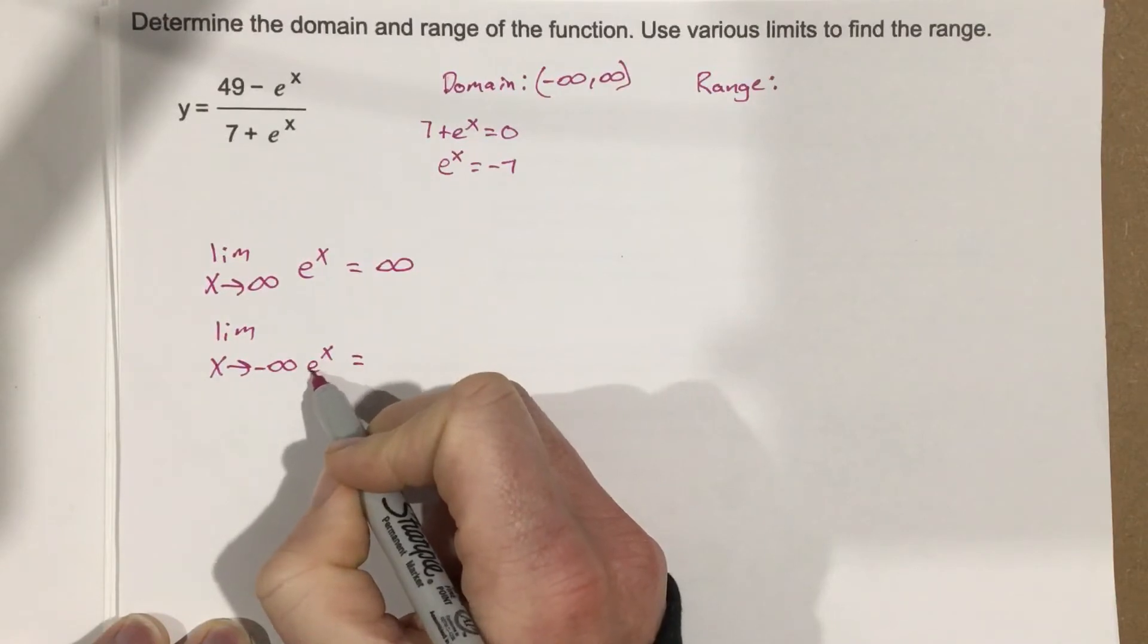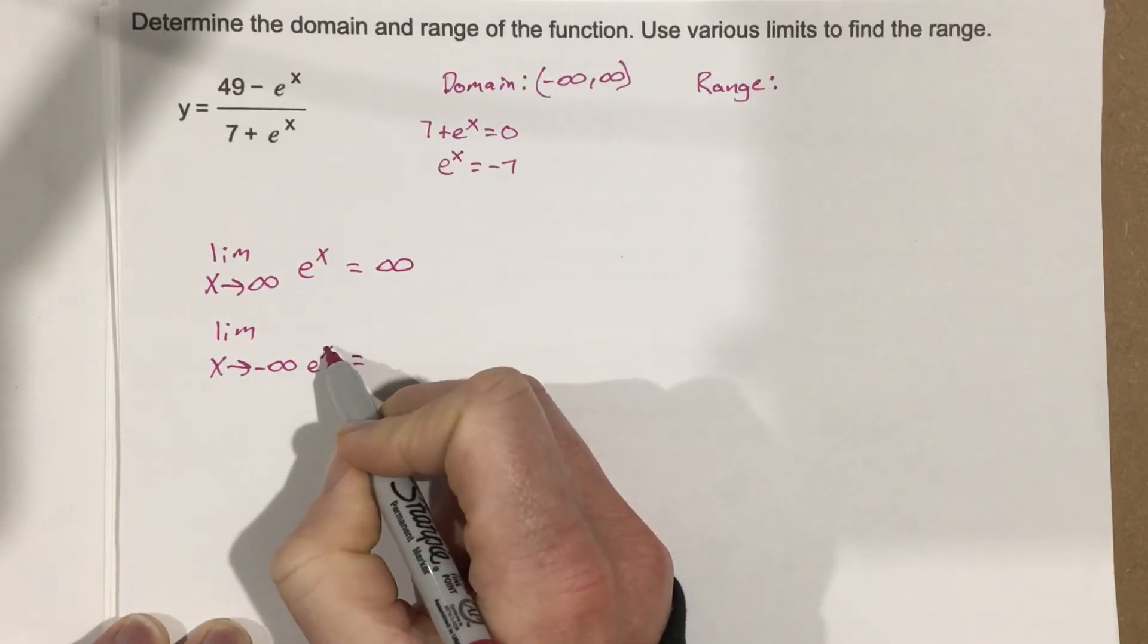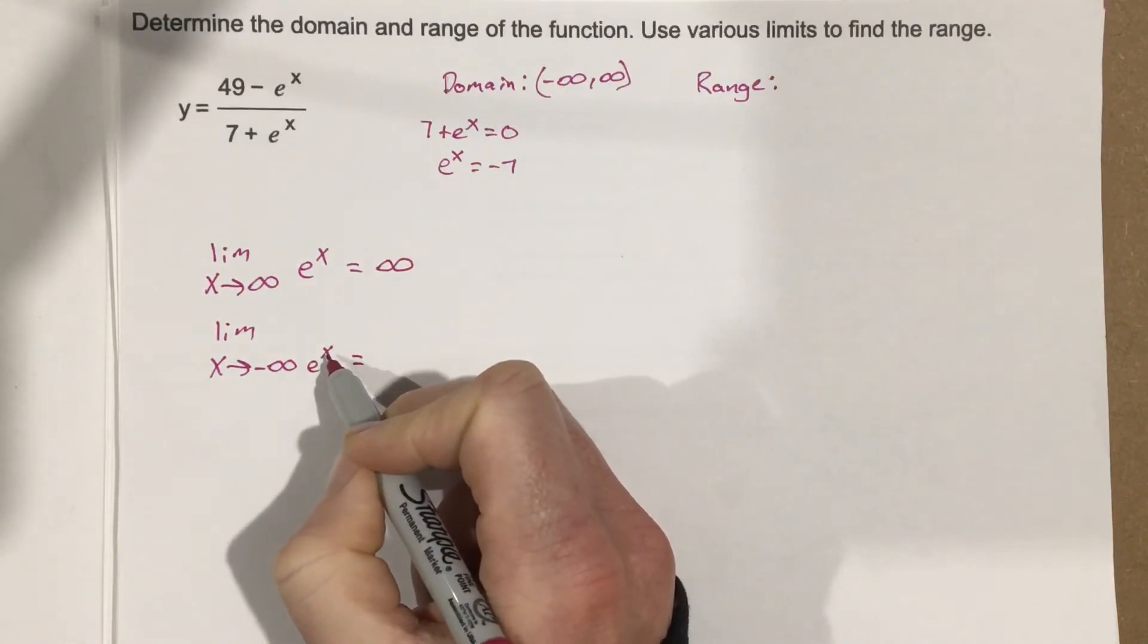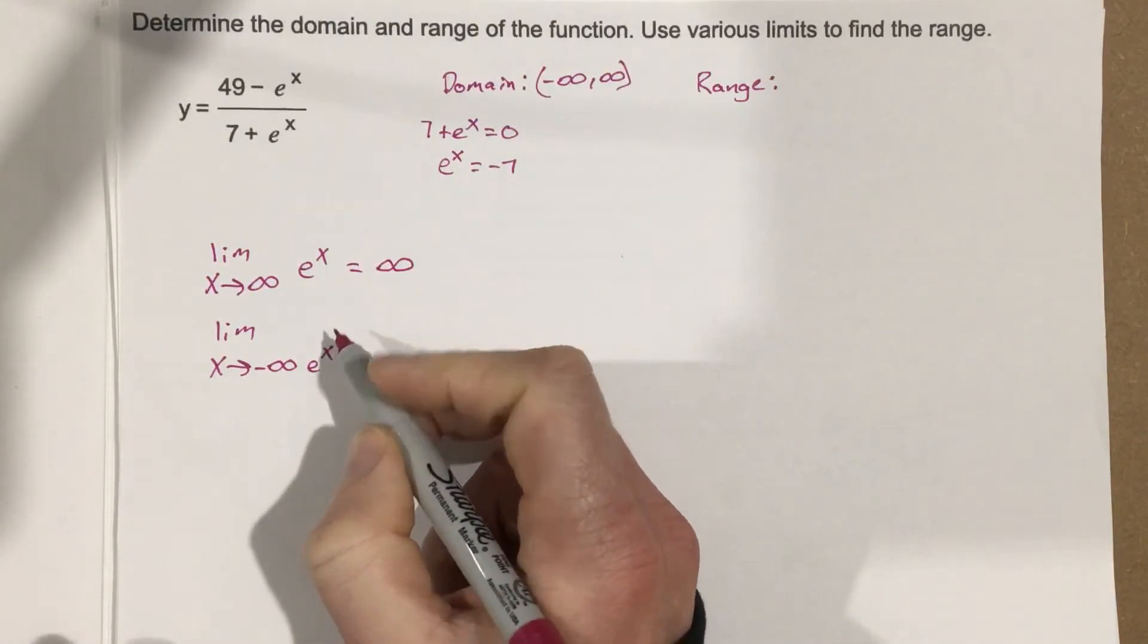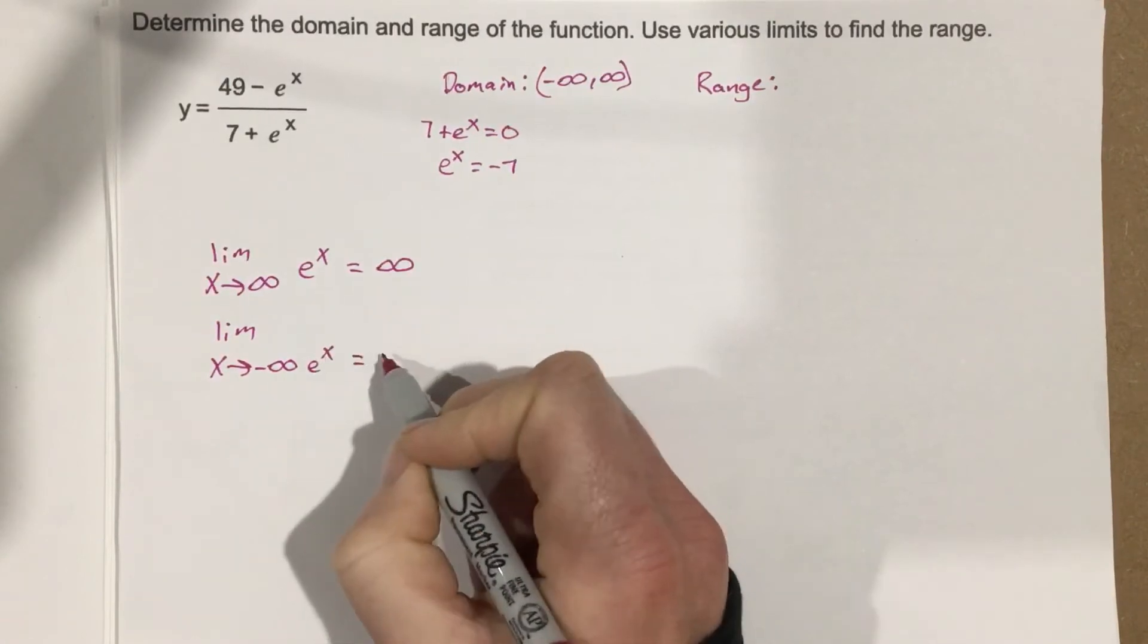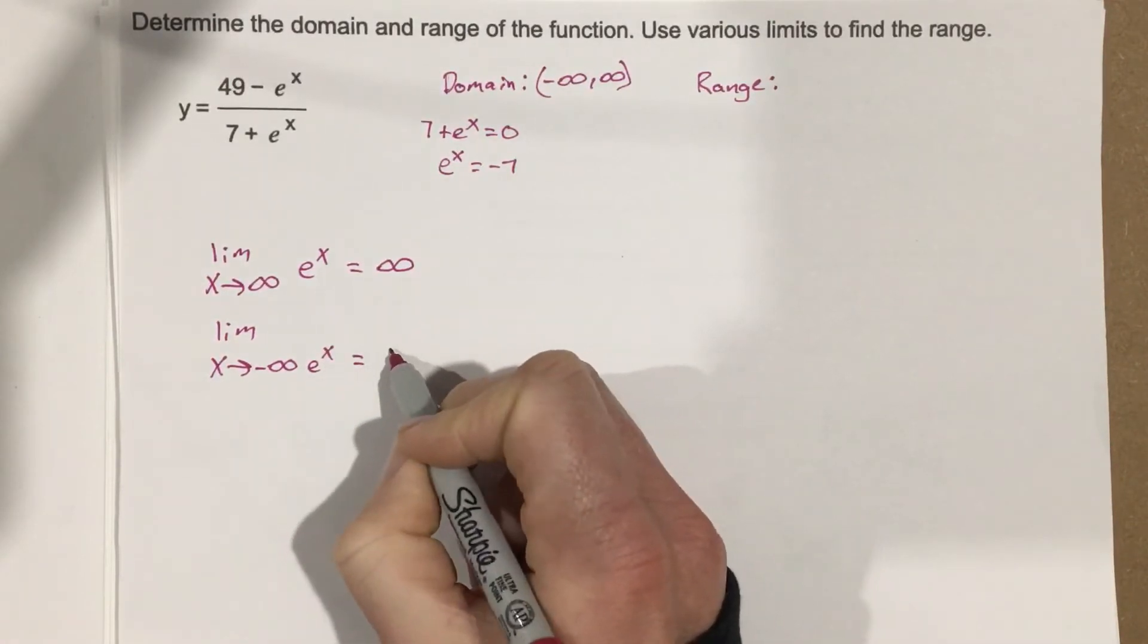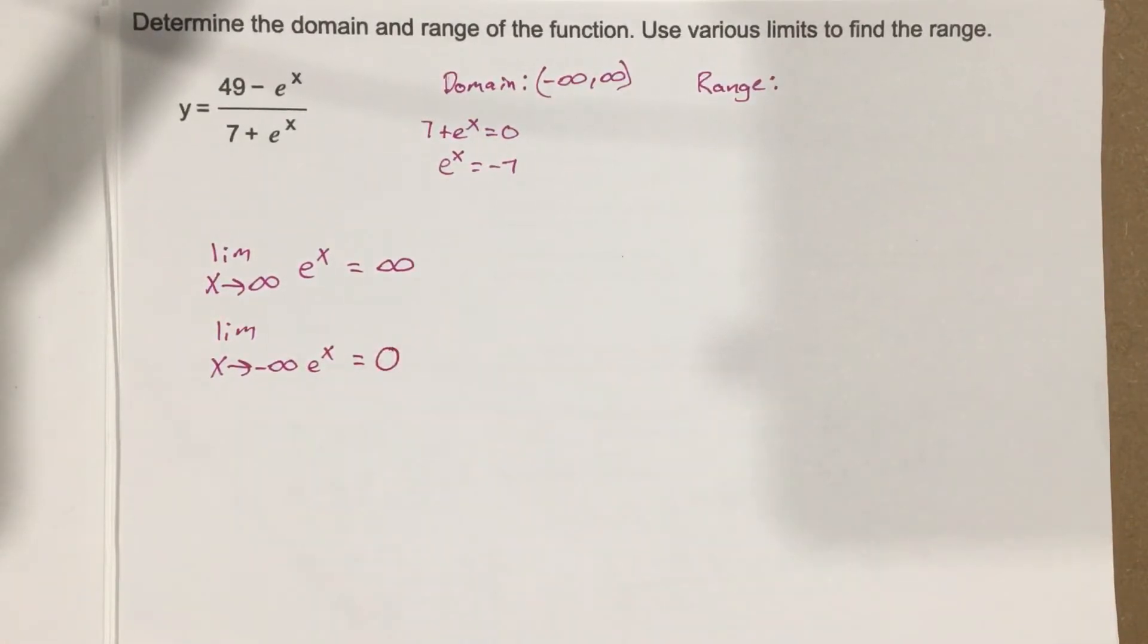Anytime we take e to the negative really large value, remember, a negative exponent just tells you to flip it into a fraction form, right? So we're going to be actually approaching 0. We're going to basically be getting a really, really, really small number.